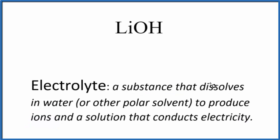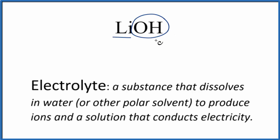For LiOH, let's first look at what type of compound we have. We have a metal and a group of non-metals — a polyatomic ion. So this is an ionic compound, and it could split apart into its ions if it's soluble in water.